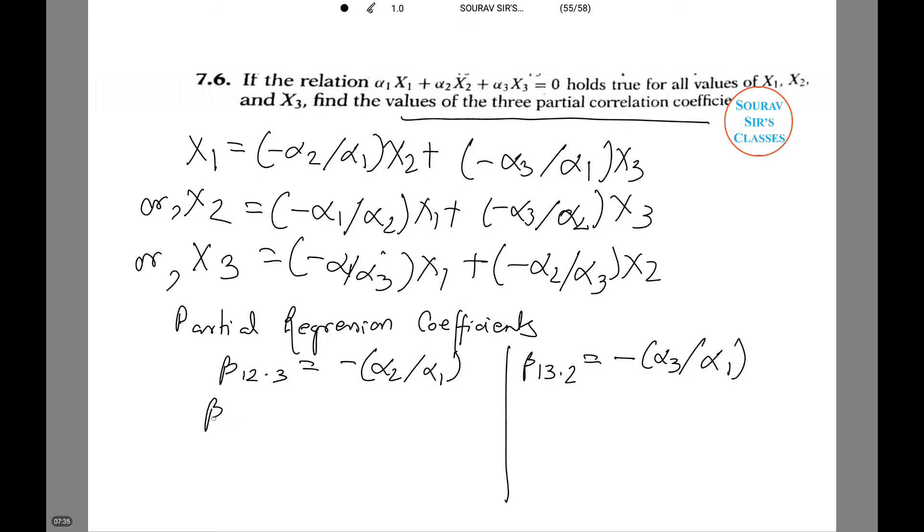Beta 1 2 dot 3 equals minus alpha 2 by alpha 1. Beta 2 1 dot 3 equals minus alpha 1 by alpha 2.